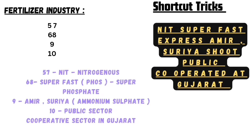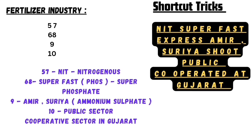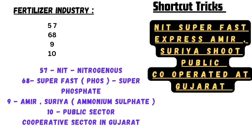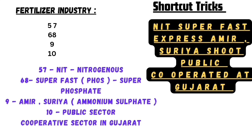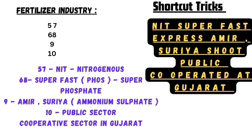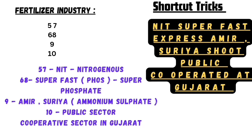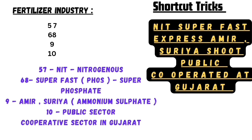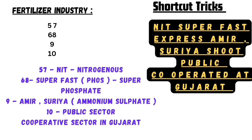Write the numbers 57, 68, 9, 10. 'Night' represents nitrogenous — 57 nitrogenous fertilizer units. 'Super fast express' — super phosphate — 68 super phosphate units. 'Amir and Surya' — AM stands for ammonium, SU stands for sulfite — ammonium sulfite. And 10 represents the public sector. Then cooperative sector in Gujarat. So there are 10 public sector units and a cooperative sector located at Gujarat.